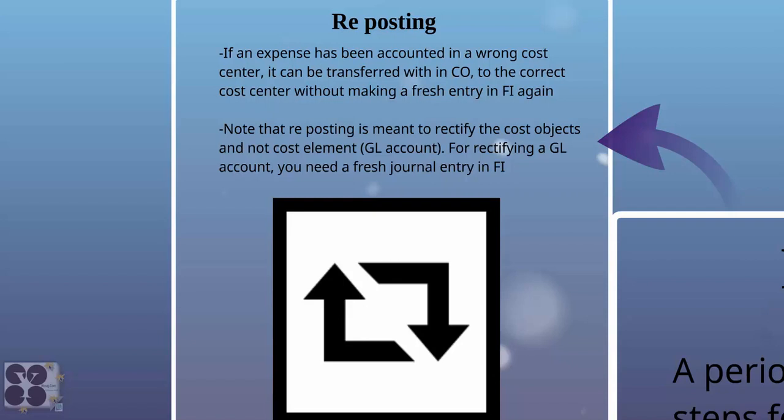For example, if you post to a wrong GL account — like posting to a marketing department GL account but wrongly posting that to the HR GL account — in costing you just cannot rectify that directly. To rectify it, you have to cancel the posting first, then enter a journal entry in financial accounting. Here we are talking about rectifying only costing objects like cost center postings, cost object postings, and cost element postings within the controlling area. You can move, delete, or repost within the controlling area without affecting financial accounting.